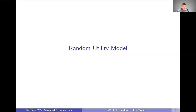In the last video we talked about the discrete choice model, which is a way that we can model economic agents making choices across a discrete set of alternatives. We talked about that very broadly, the setup of the problem, and now in this video we're going to talk about the random utility model, which is how we're going to take that general economic framework and turn it into an actual econometric model.